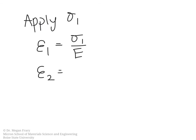The strain in the two direction is negative Poisson's ratio times strain one, which we can replace with this, and strain three is the same as strain two.